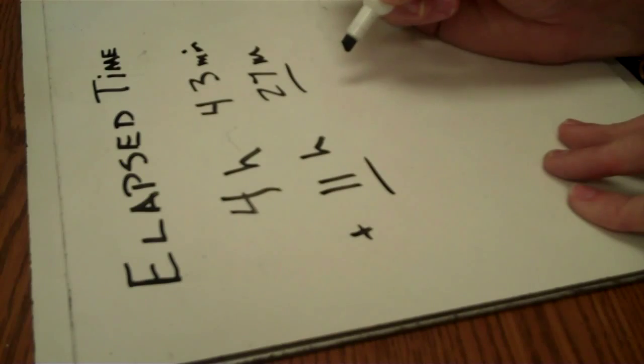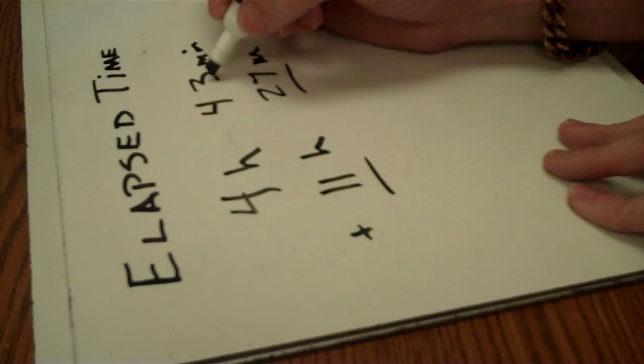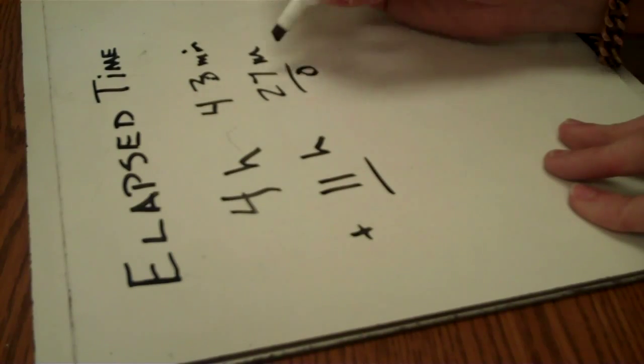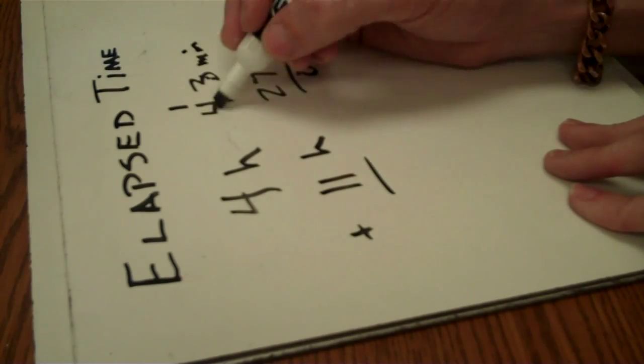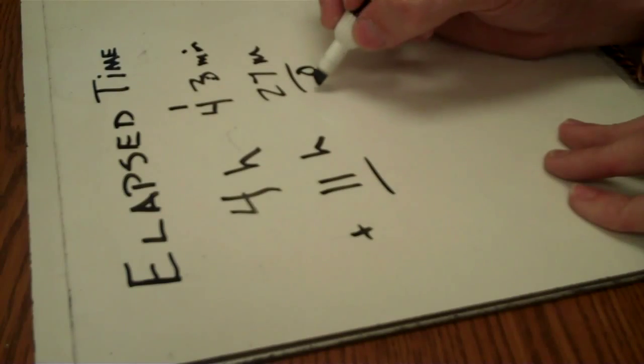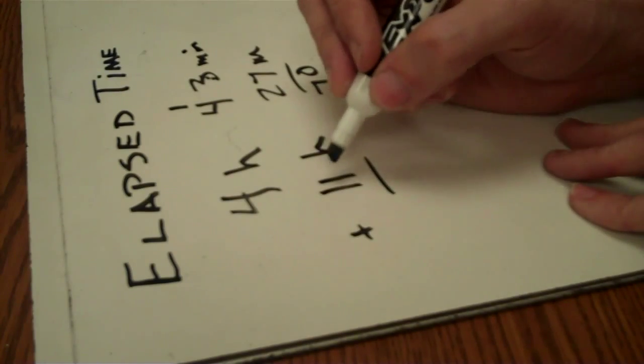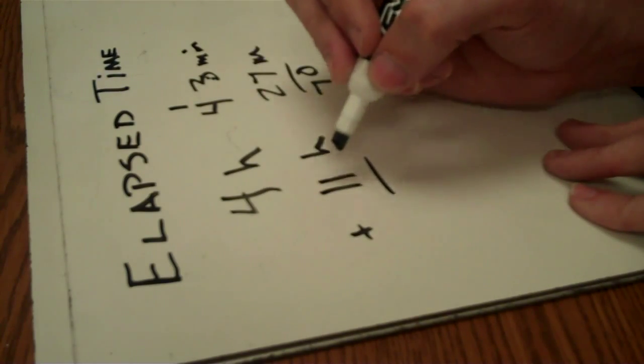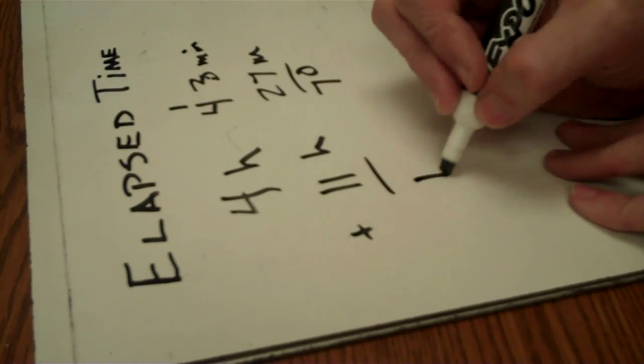We are just going to add these up. 7 and 3 is 10, carry the 1. And then we just add up the hours. 11 plus 4 would be 15.